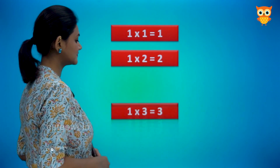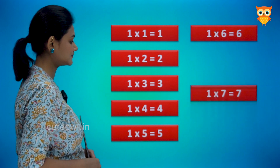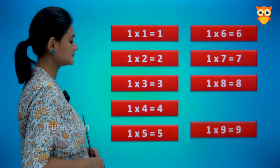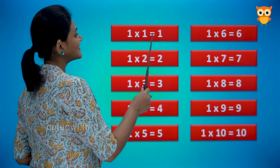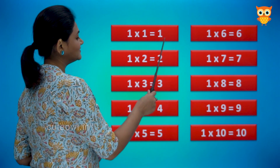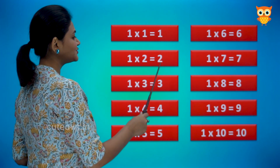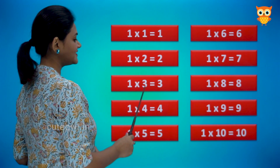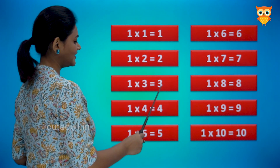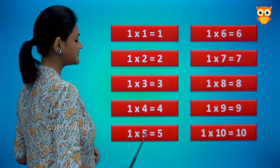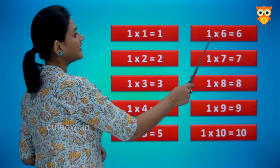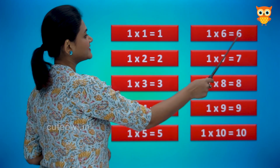Let us learn the table of one. One ones are one. One twos are two. One threes are three. One fours are four. One fives are five. One sixes are six.